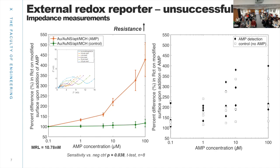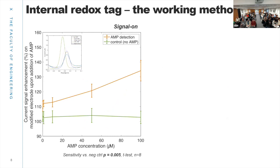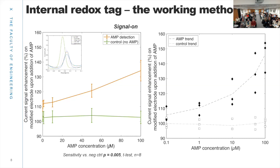But I did see some potential in that aptamer, which is why I decided to order another batch with the methylene blue tag on the 3' prime. With the working method, we are measuring current instead of resistance, and again we can see a nice difference between positive and negative controls — the current increases in the presence of the target, exhibiting signal-on approach. Across my other attempts, there is a clear trend and clear difference between positive and negative controls.